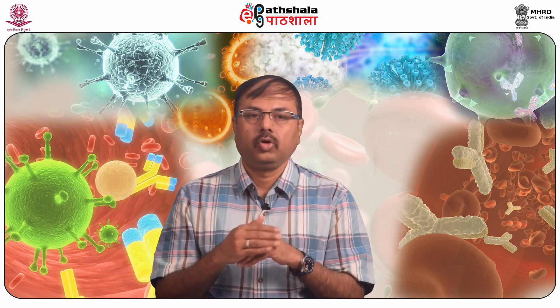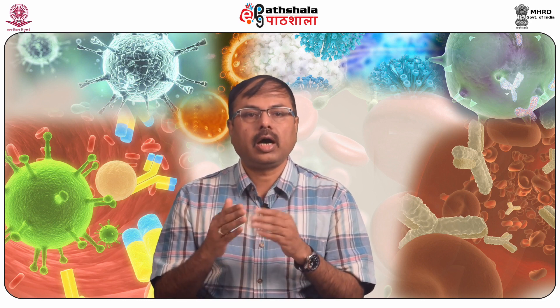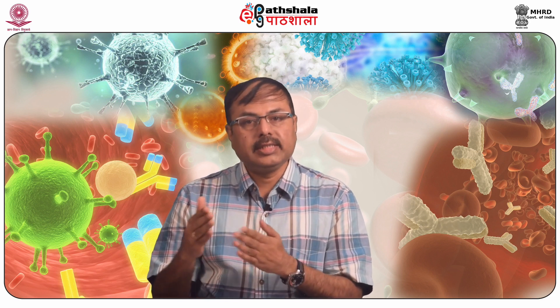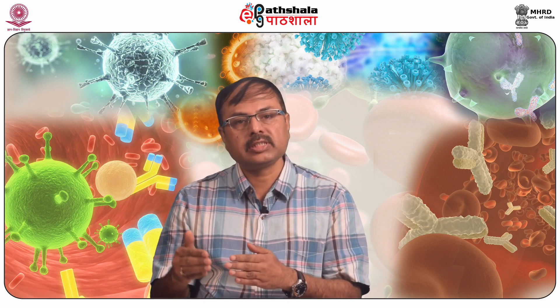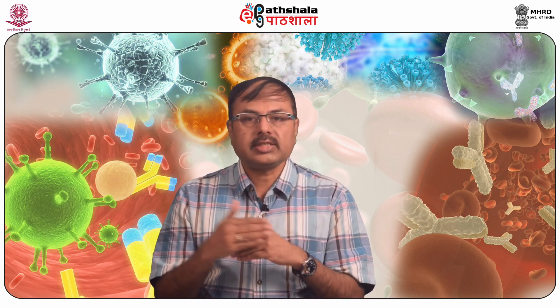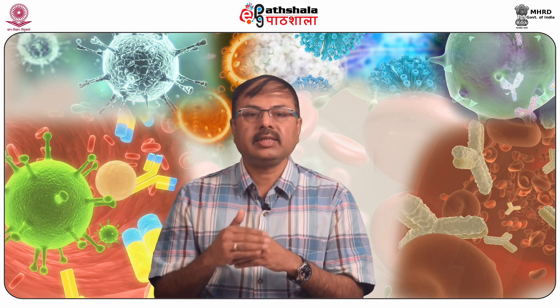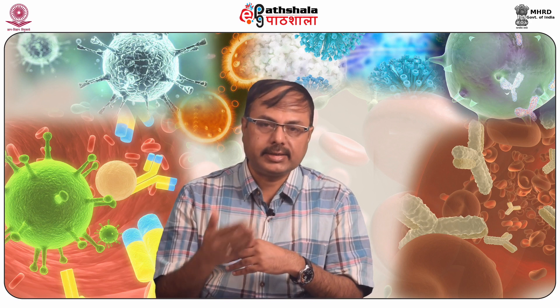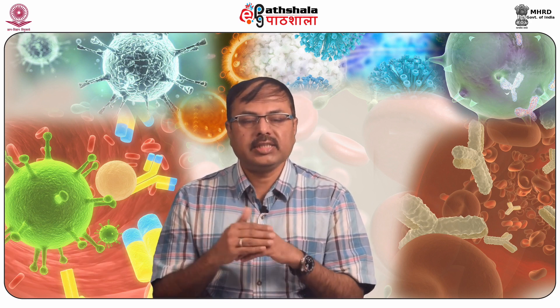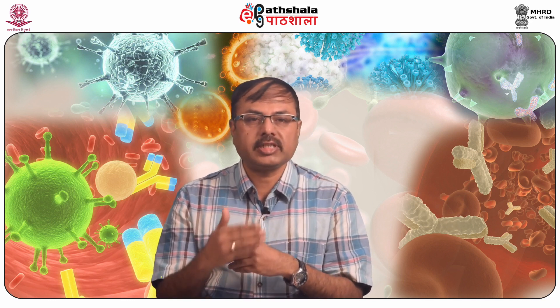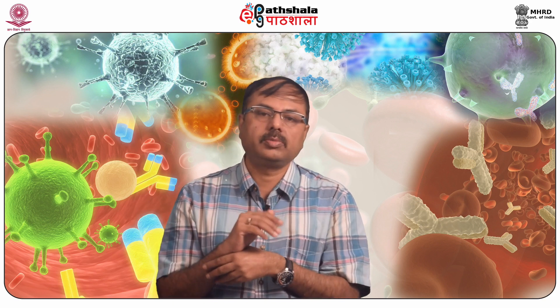Let us summarize what we have learned in this module. Both adaptive and innate responses are carried out by a number of cell types. These cells are formed in the bone marrow by the process called hematopoiesis. B cell or B lymphocyte: a white blood cell that produces antibodies specific to an antigen. Basophil: a white blood cell that releases histamine — a substance involved in allergic reactions — and produces substances to attract other white blood cells such as neutrophils and eosinophils to the site of injury, responsible for inflammation.